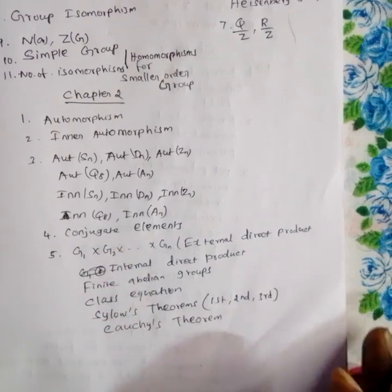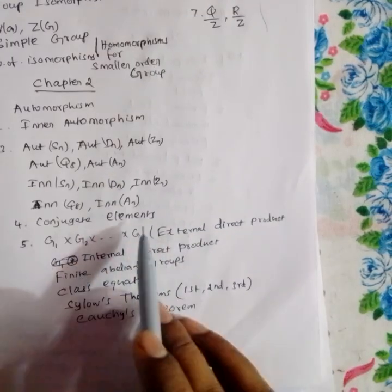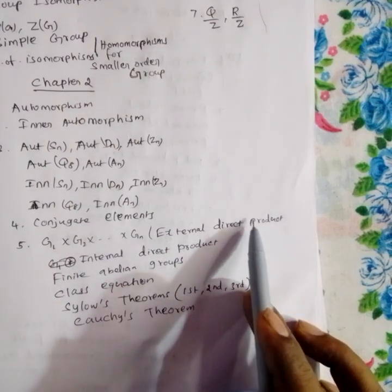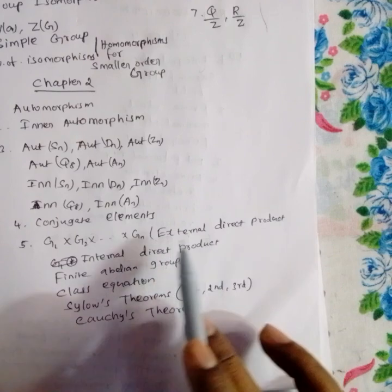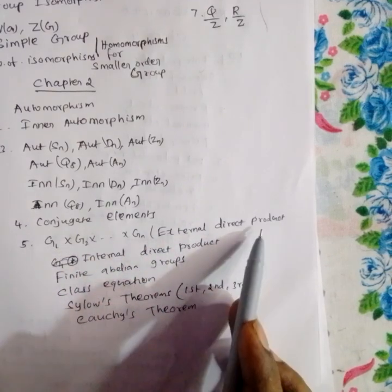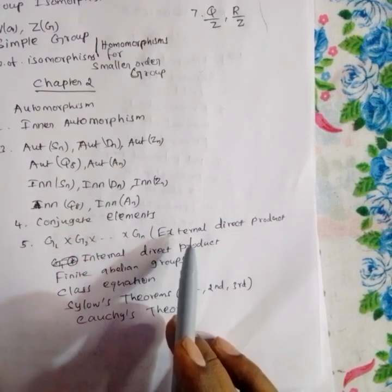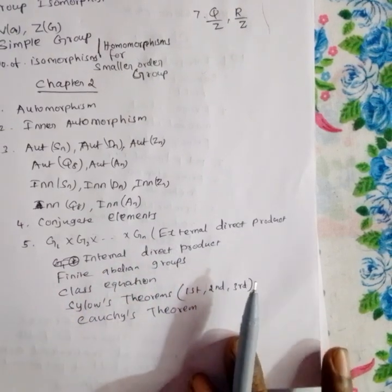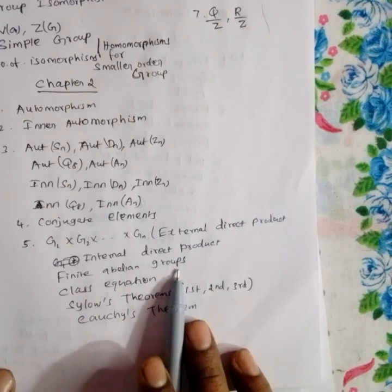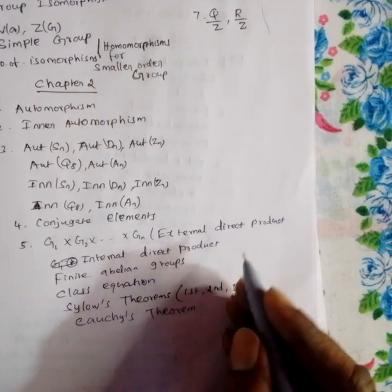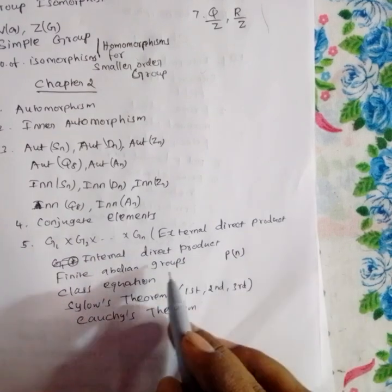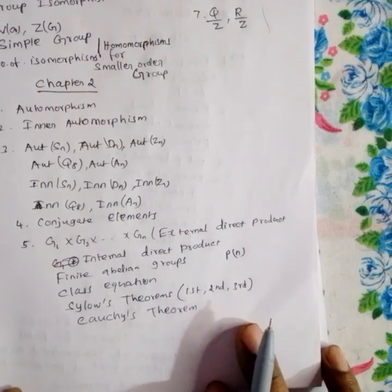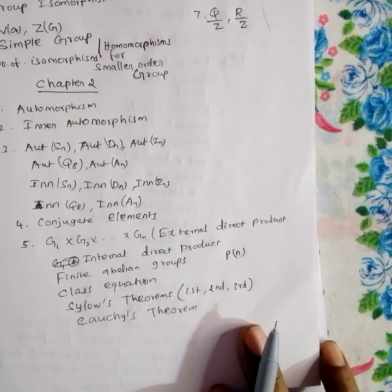We will cover conjugate elements, external direct products of groups, and partitions. We will look at P(N) and partitions of N. The topic of class equations and the order of a group is also covered.